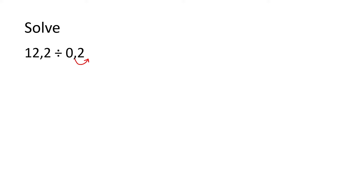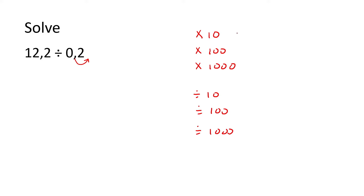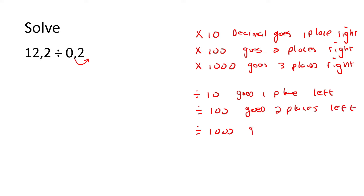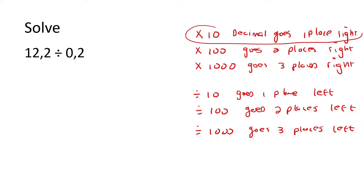You should know that when you multiply numbers by 10, the decimal goes one place to the right. When you multiply by 100, it goes two places. When you multiply by 1000, it goes three places. And when you divide by 10, the decimal goes one place left; divide by 100, two places left; divide by 1000, three places left. So if we would like the decimal to go one place to the right, then we need to multiply by 10.